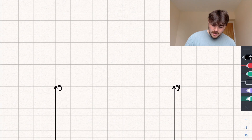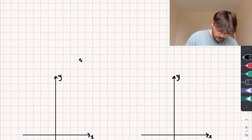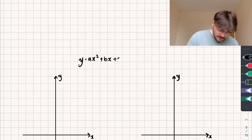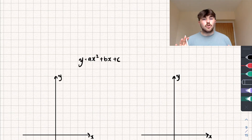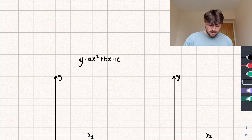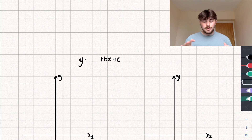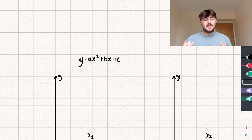Say we take a generic quadratic equation, for example y equals ax squared plus bx plus c, where a, b, and c are just numbers. Importantly, a cannot be equal to zero, because if a was equal to zero then our x squared term would disappear and we would no longer be dealing with a quadratic graph. So a, b, and c are just numbers where a is not equal to zero.